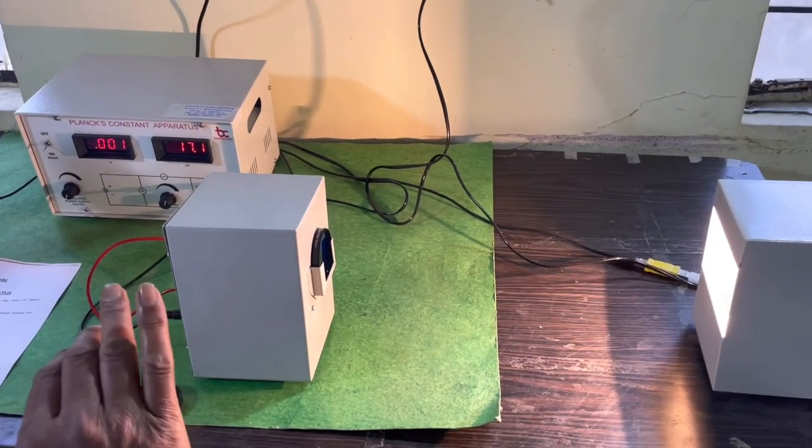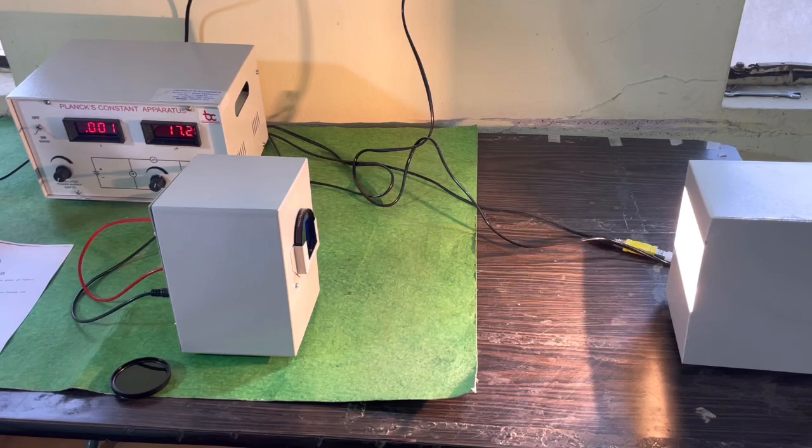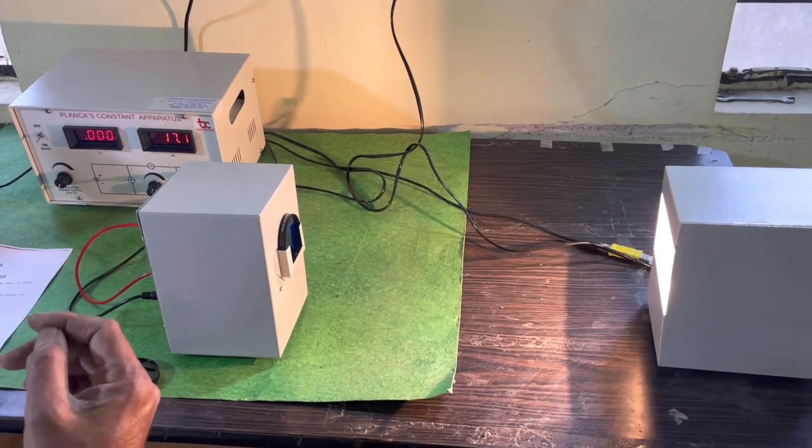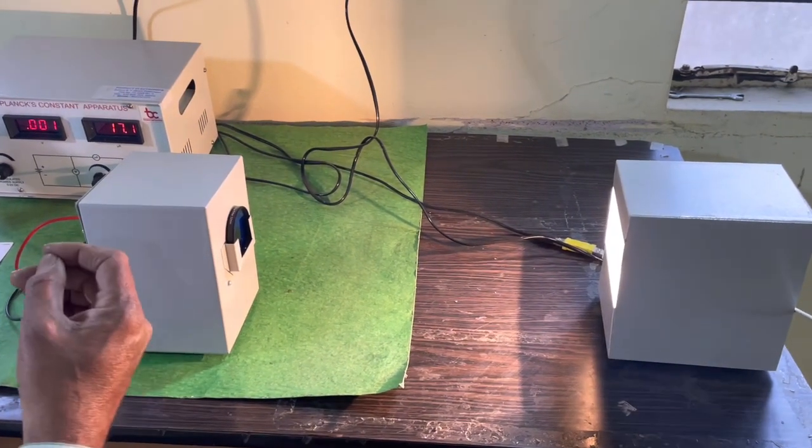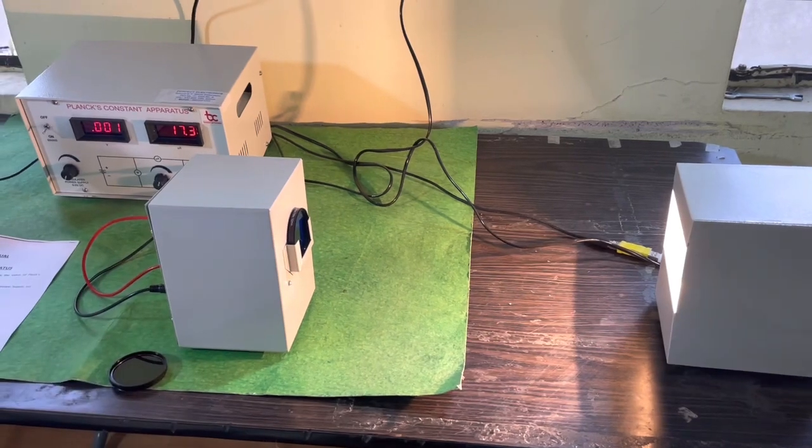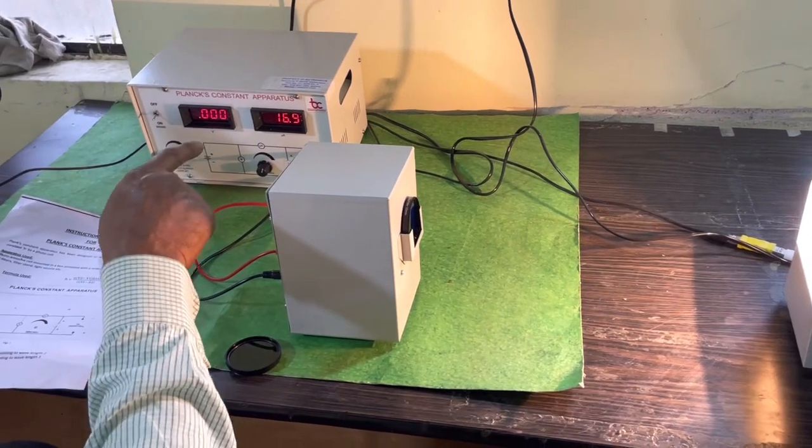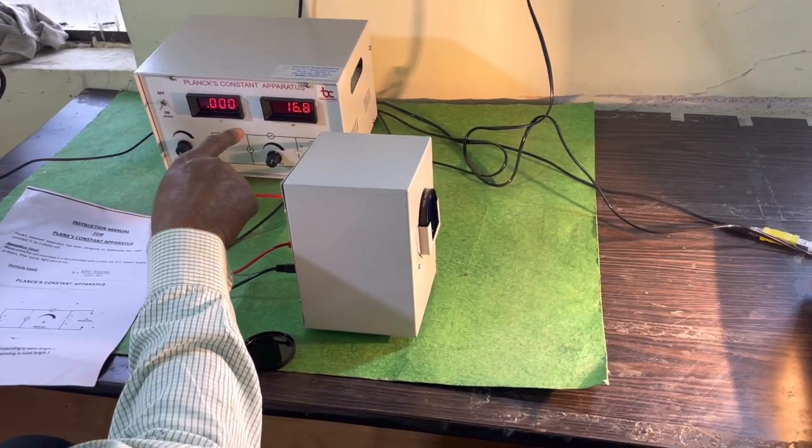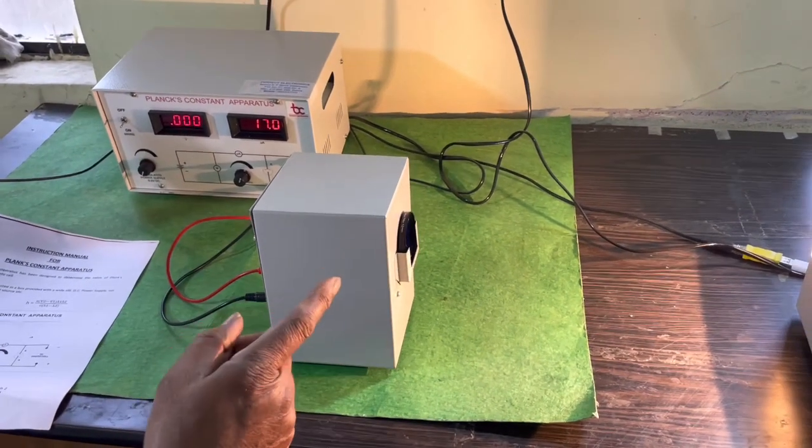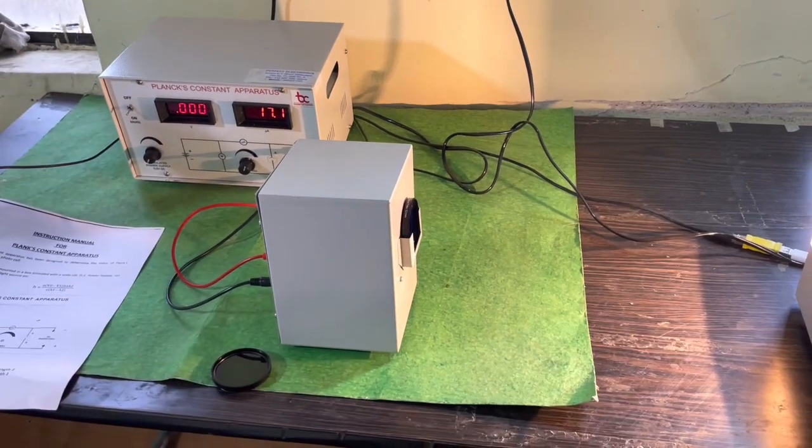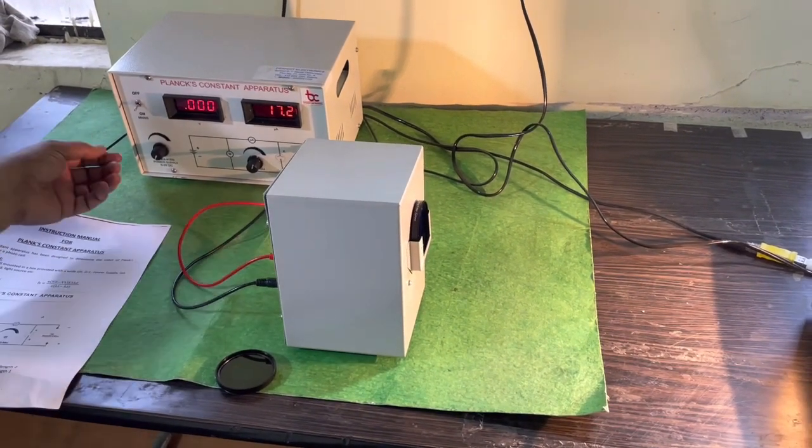All the wavelengths are suppressed. Only the wavelength corresponding to blue color is incident on the photocell, and voltage developed across the photocell is given here. The corresponding current due to this filter is 17 microamperes. Now I am increasing this voltage to make the current zero.